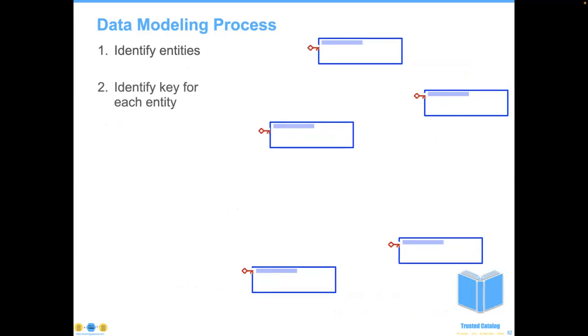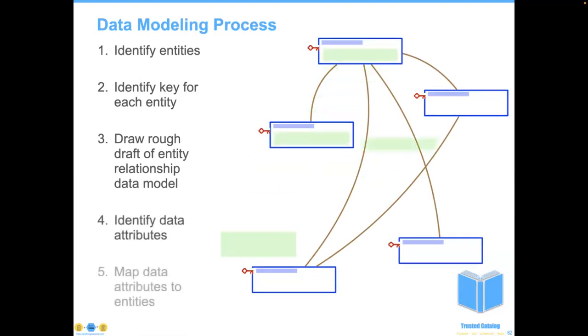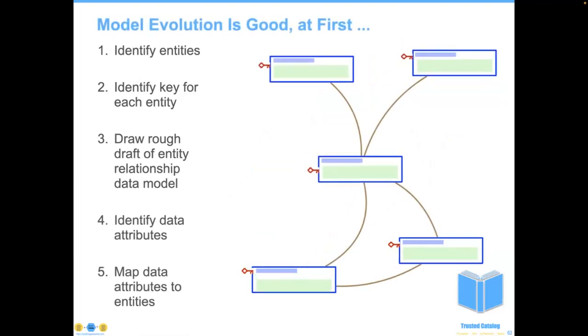Let's talk about the process of data modeling. You want to start with identifying entities — big blocks of persons, places, or things about which you're going to create, read, update, or delete information. Then identify a key for each entity — how am I going to identify a unique instance? How do I find this Peter Akin versus the one who's a lawyer in Florida versus the one who's a rock concert promoter in Ireland? After identifying the key, draw a rough map to connect the various relationships, then identify data attributes and parcel them out among the various entities.